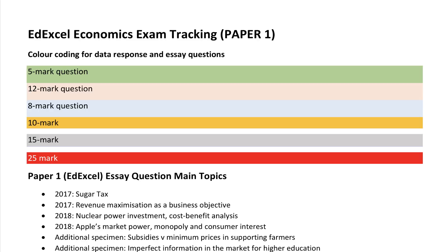In this video we're going to take a look at the Edexcel paper one topic mapping. What we do here is take the specification in the order it's set out for paper one, which covers themes one and three — it's the micro paper — and we look to see which topics have been tested so far in 2017, 2018, and also covered in the sample assessment materials (SAMs) and an additional specimen paper made available by the board. We're going to color code this.